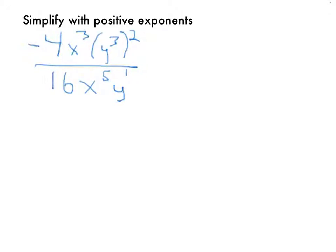Simplify with positive exponents. So the problem is negative 4 times x to the third times y cubed, and that's all to the second power, divided by 16x to the fifth times y to the first.